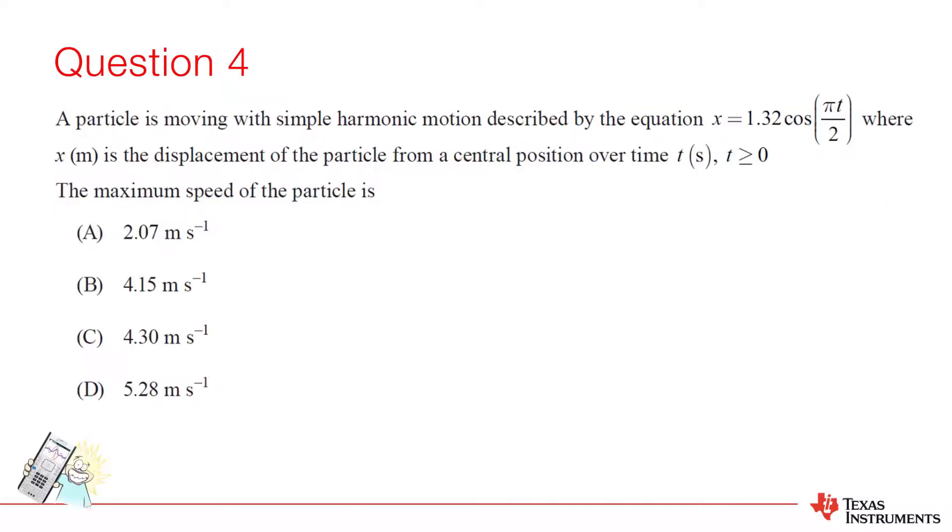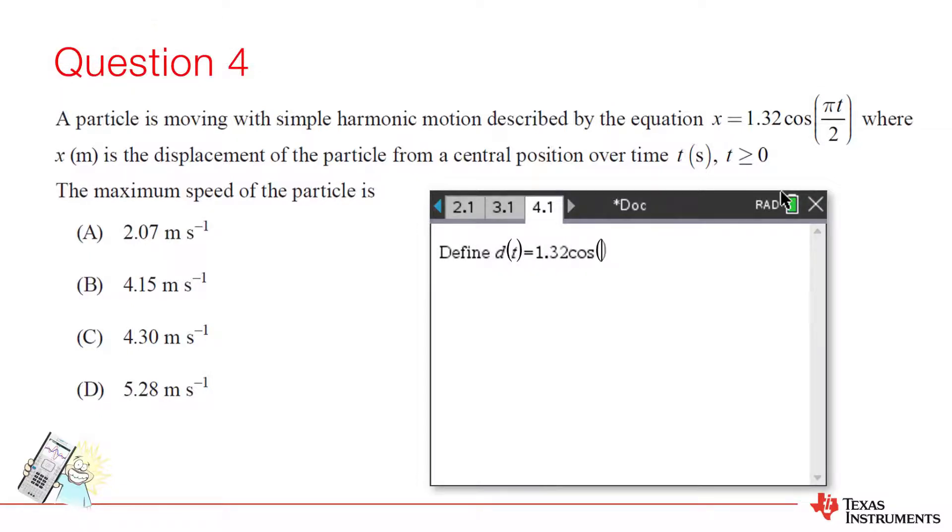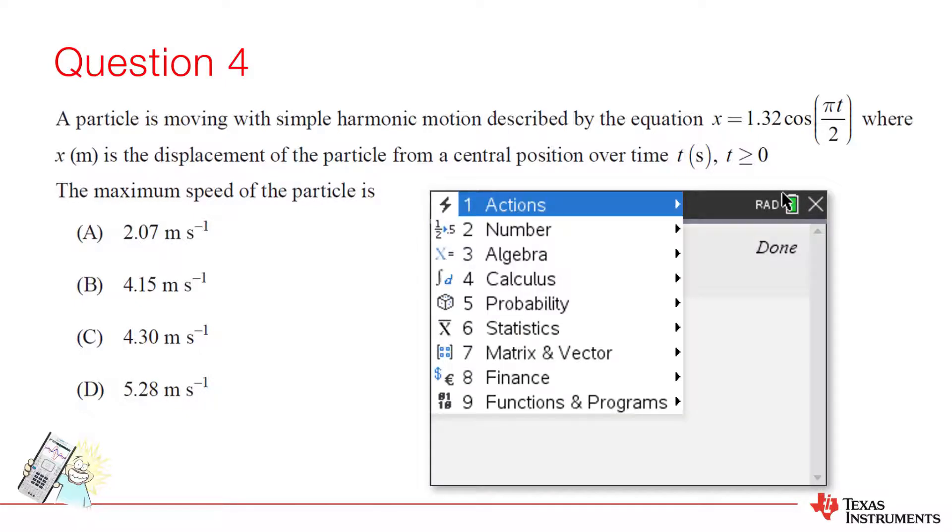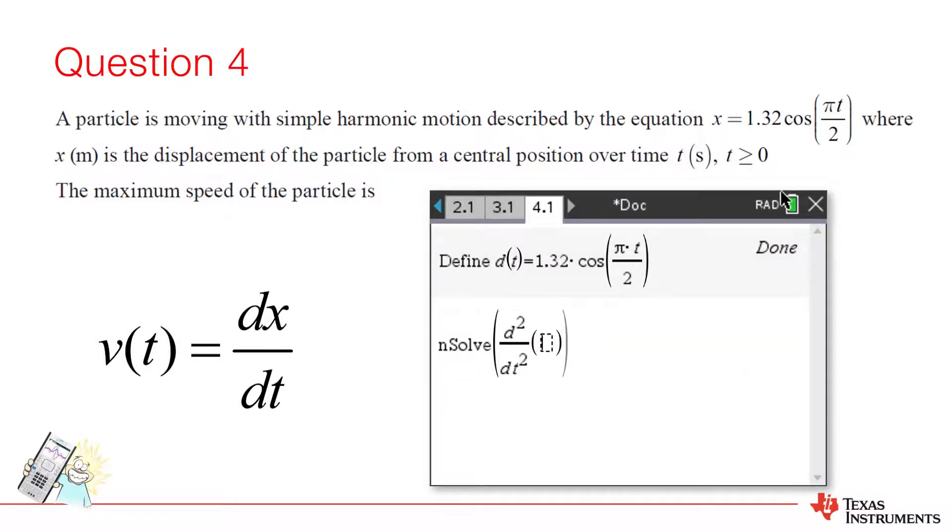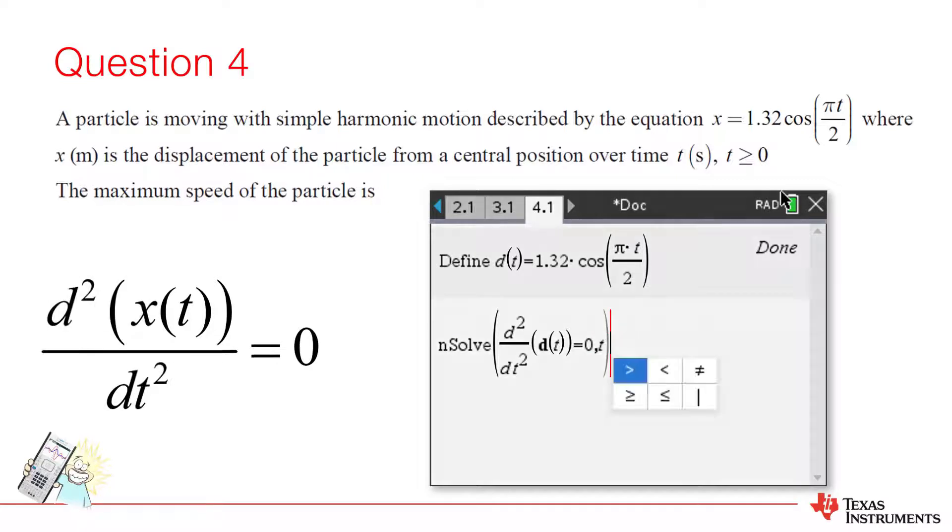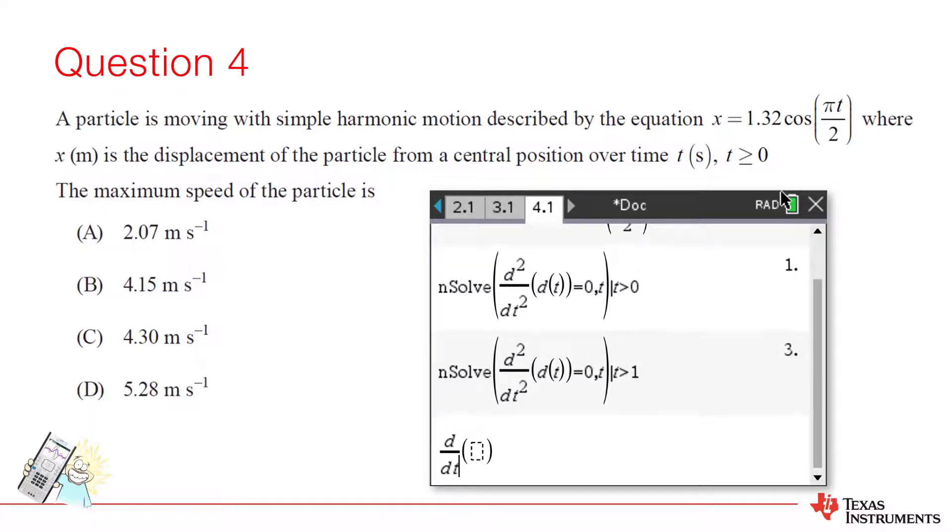OK. Question 4. This question asks us to find the minimum speed of a particle. We are given information about its position versus time. I'll define the position function as d(t). The derivative of position time gives us velocity. We can find the maximum velocity by further differentiation. In other words, solve the second derivative equal to zero. This will give us the maximum or minimum velocity. Once you have the time, or times, substitute them back into the velocity equation to check for the maximum speed.